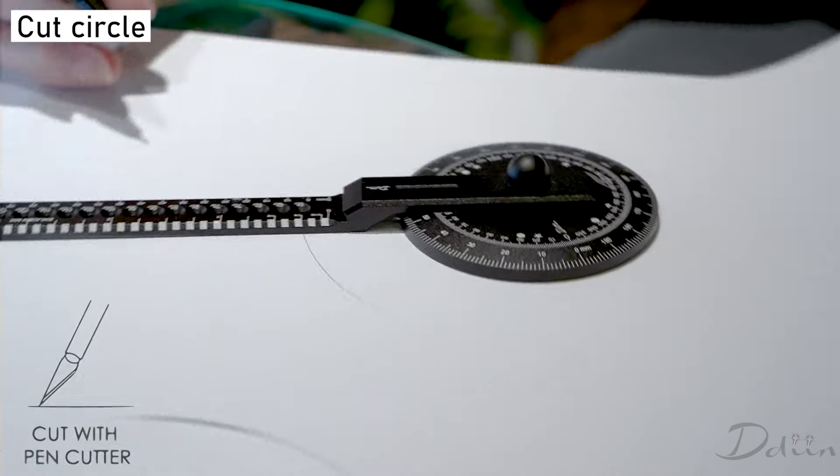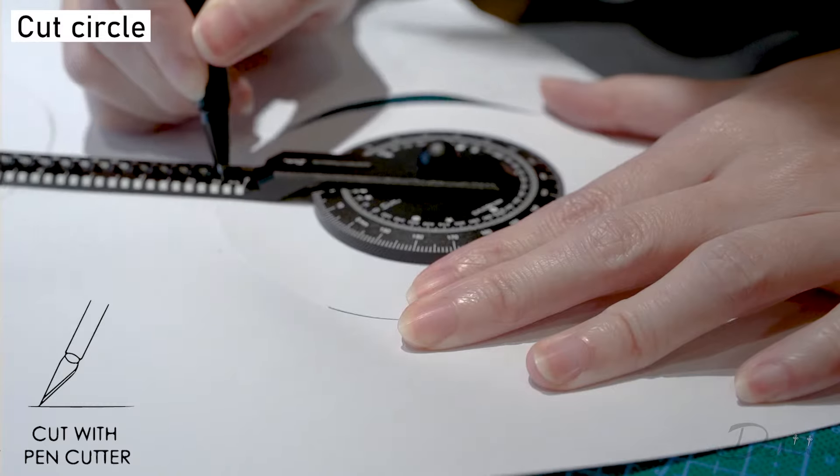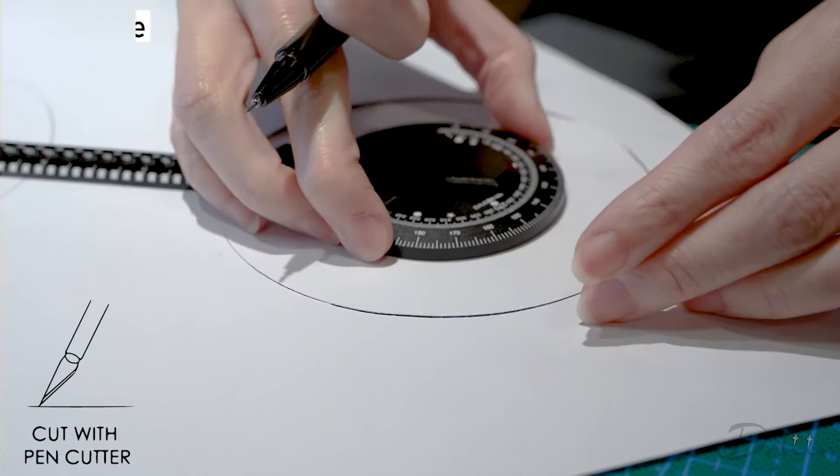To cut a circle, grab a cutting board and your hobby knife pin, insert the blade on the hole, and carefully rotate the wing to cut the circle.